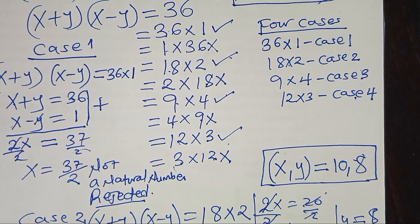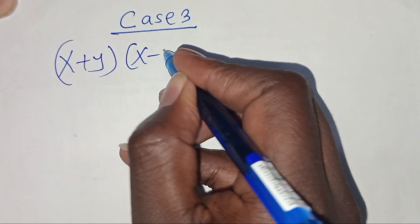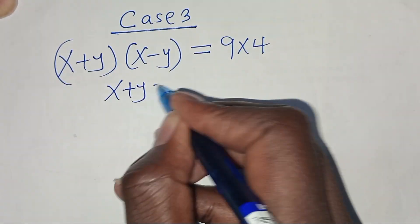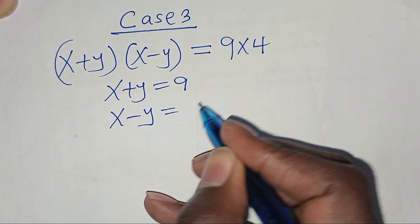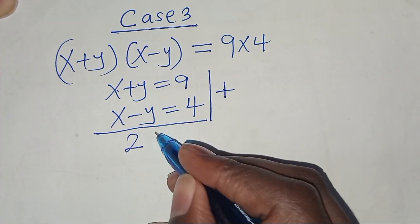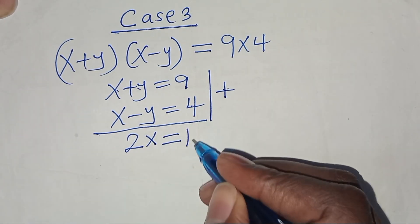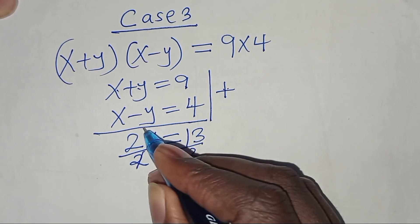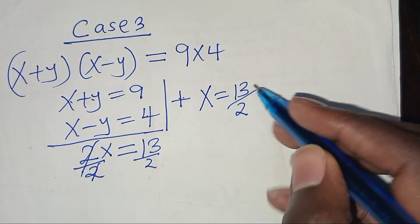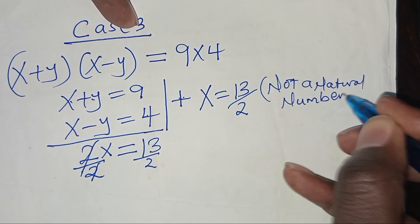Case 3: (x + y)(x - y) = 9 × 4, so x + y = 9 and x - y = 4. Adding gives 2x = 13, so x = 13/2. This is a fraction, not a natural number, so the solution is rejected.